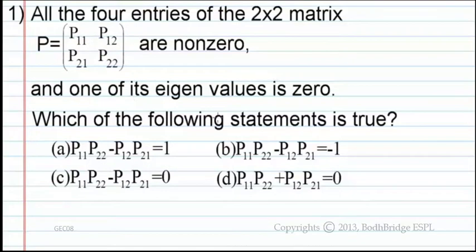Which one of the following statements is true? Option A: P11 into P22 minus P12P21 equals 1. Option B: P11 into P22 minus P12 into P21 equals minus 1. Option C: P11 into P22 minus P12 into P21 equals 0. And option D: P11 P22 plus P12 into P21 equals 0.